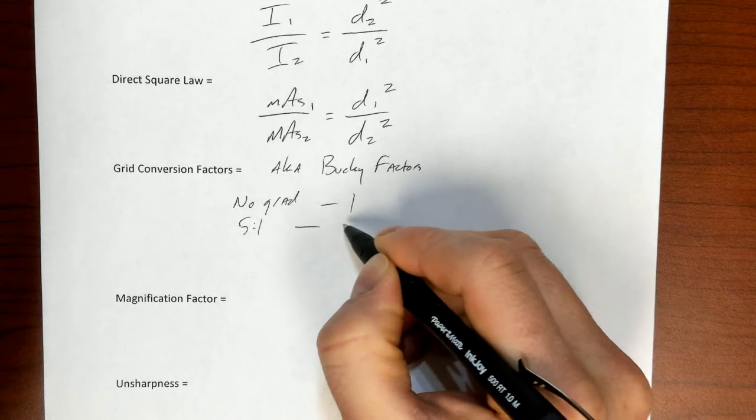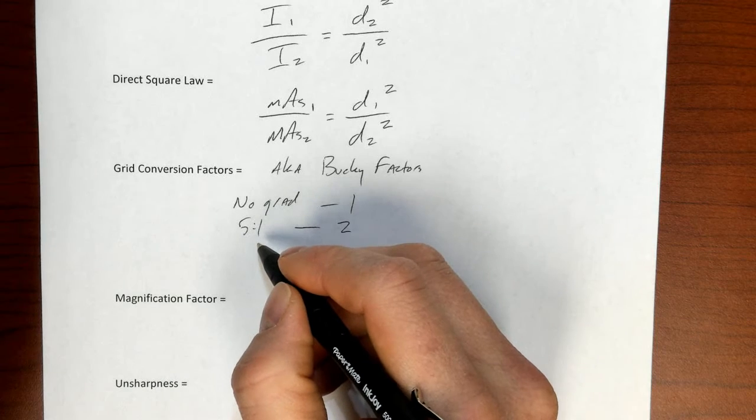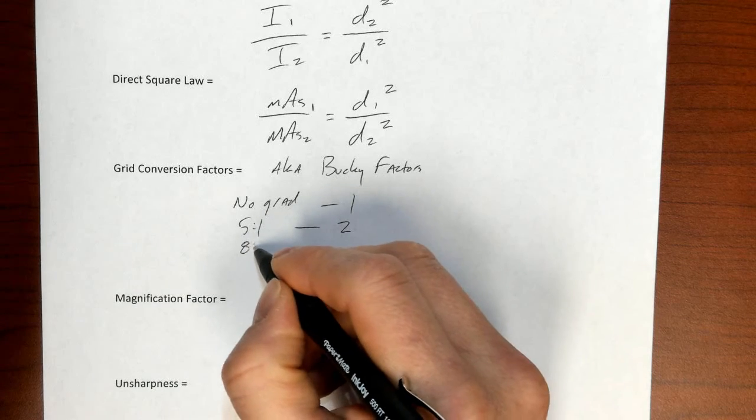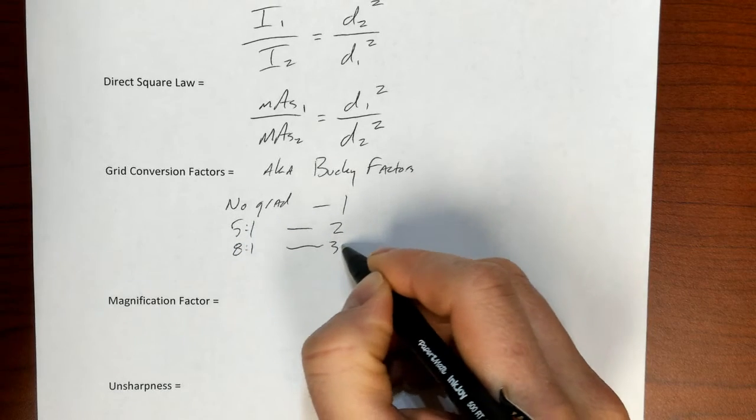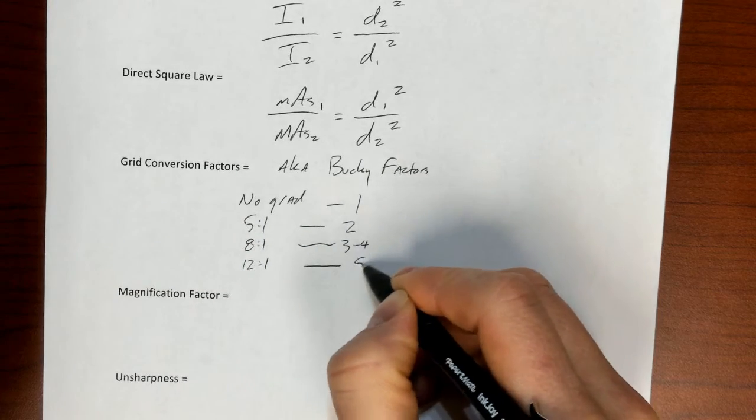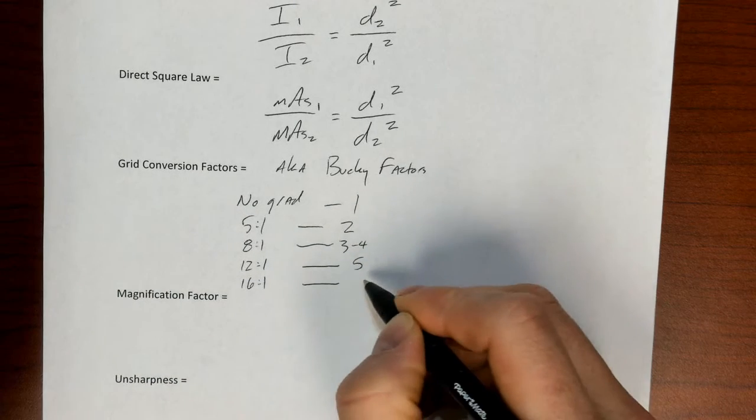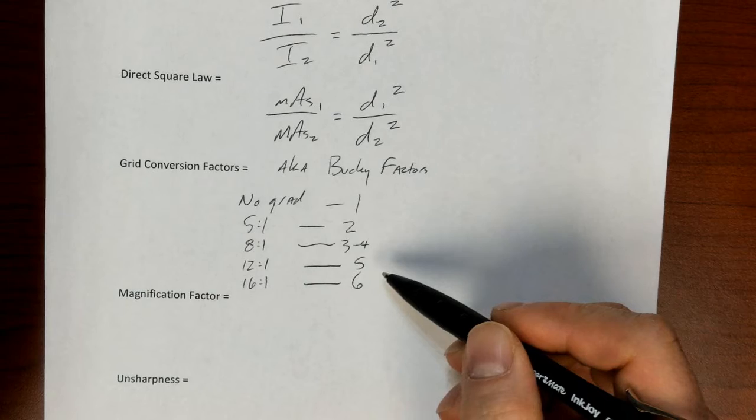And this is generally the way that I break this down. Because I'll show you, this comes from Stuart Bruchon's book. So if I'm using a 5 by 1 grid, the grid factor I need to use is a 2. An 8 by 1 grid, I would use a Bucky factor of 3 or 4. A 12 by 1 grid, a Bucky factor of 5. And a 16 by 1 grid would require an increase of mAs by about 6 times.